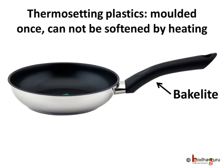On the other hand, there are some plastics which when moulded once cannot be softened by heating. These are called thermosetting plastics. For example, bakelite. Cookware handles are made of bakelite, so these handles don't get soft when heated.